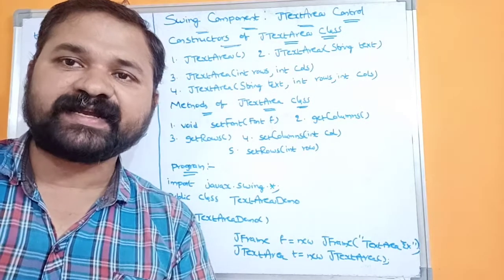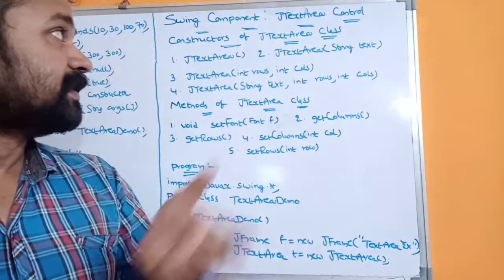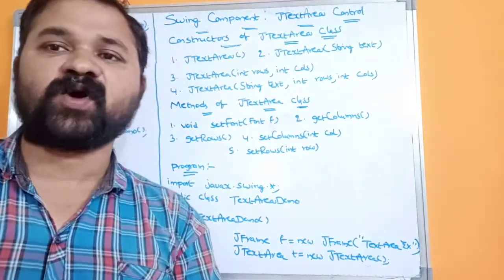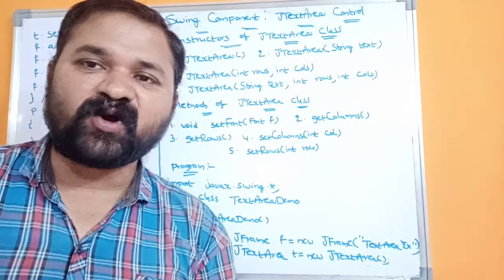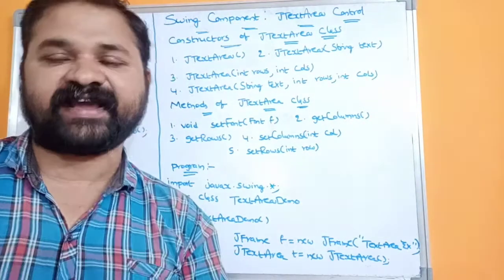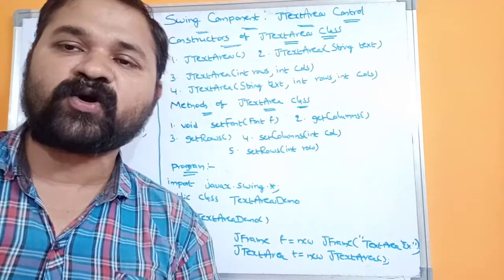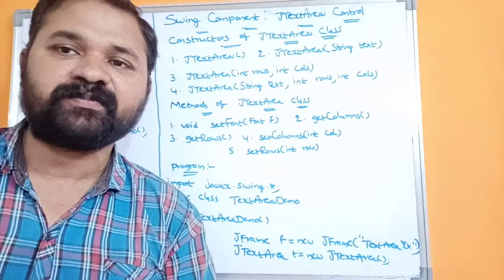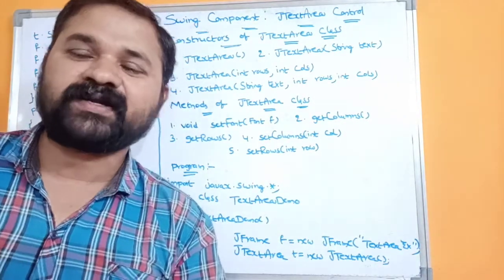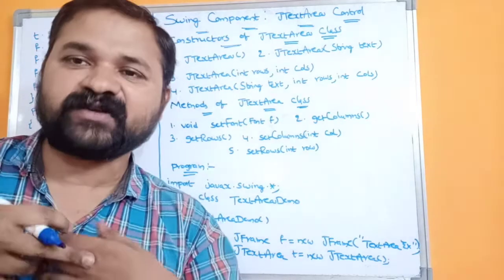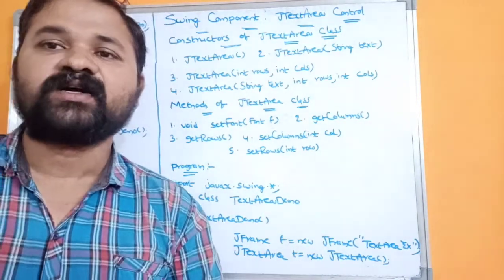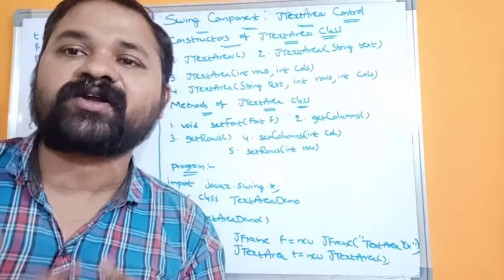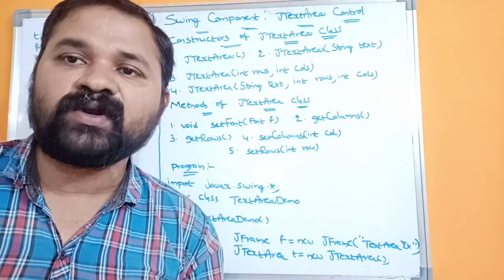Let's see about the Swing component JTextArea. JTextArea is mainly useful in order to create a multiline text box. A multiline text box means we can enter multiple lines of text. The best example is if you want to enter an address — name, father's name, door number, district, pin number, state, country — we need to specify several details in several rows, so we can use this multiline text box.